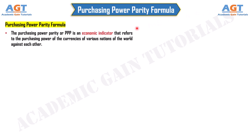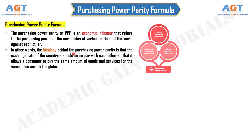The Purchasing Power Parity, or PPP, is an economic indicator that refers to the purchasing power of the currencies of various nations of the world against each other. In other words, the ideology behind the Purchasing Power Parity is that the exchange rate of the countries should be on par with each other so that it allows a consumer to buy the same amount of goods and services for the same price across the globe.